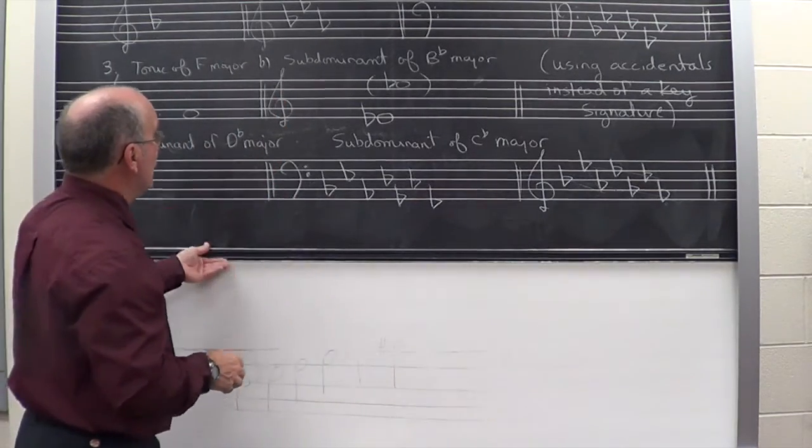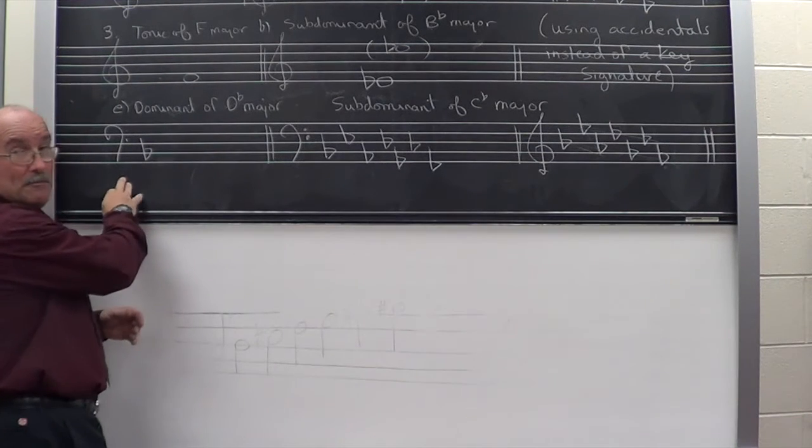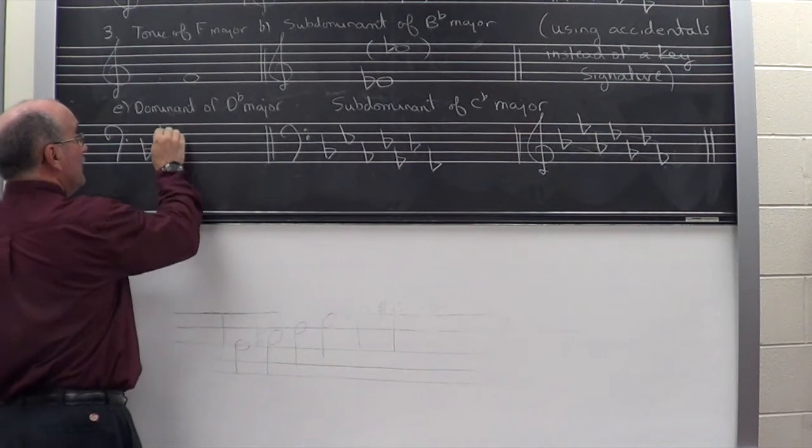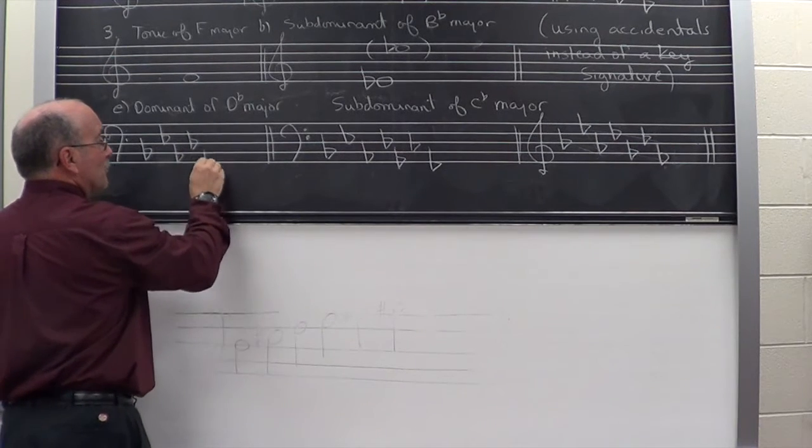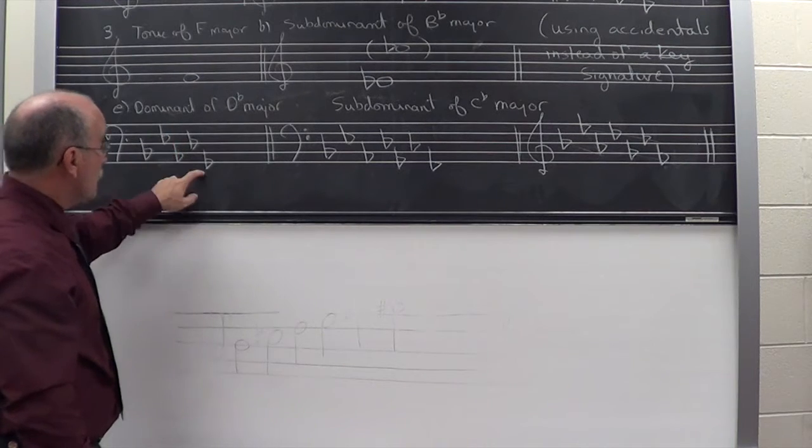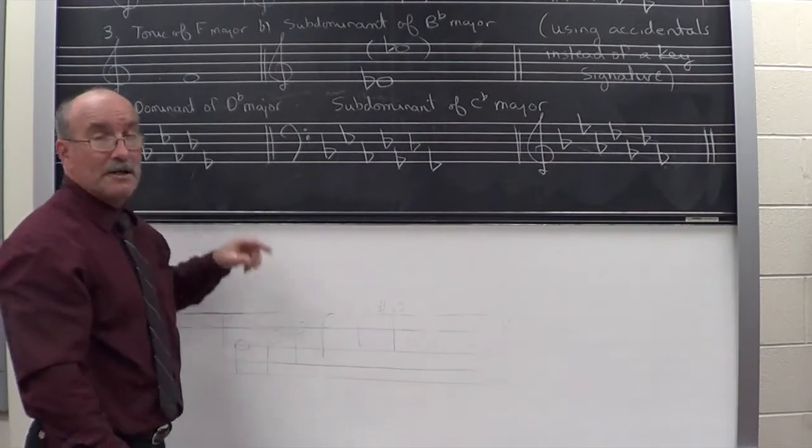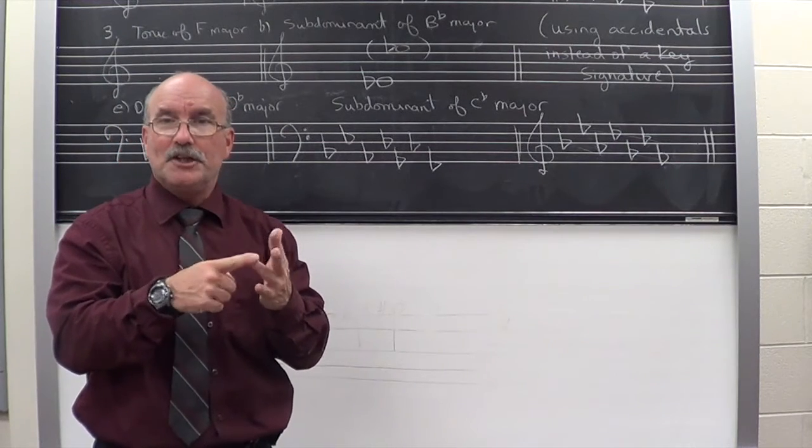And again, it says the dominant of D flat major. Well, it said using key signature. So I have to go, by the way, I'm in the bass clef. Battle ends and there's the name of the key down, so I add one. Goes. Battle ends and down goes. And then it says the dominant. That means the fifth note. So D, E, F, G, A. The fifth note is A.